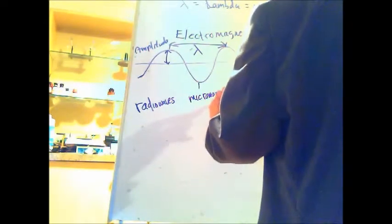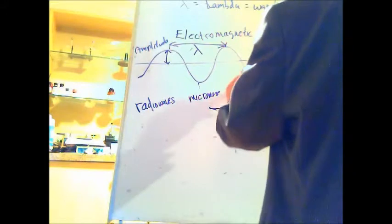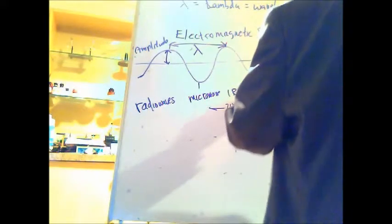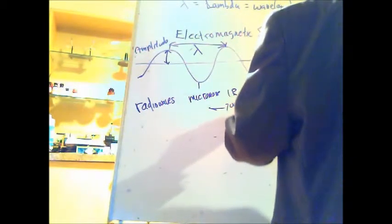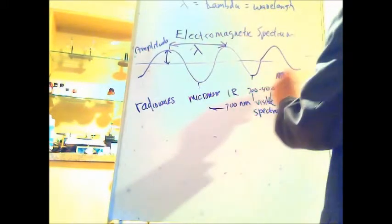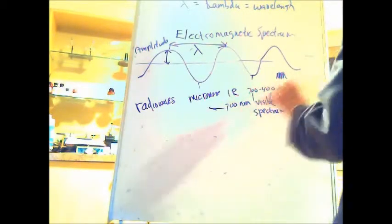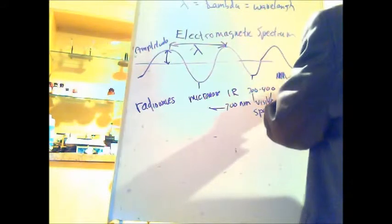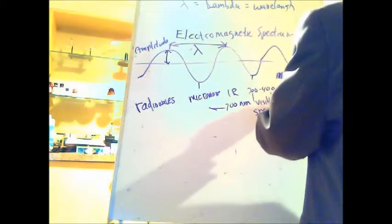The infrared starts at somewhere around 700 nanometers in wavelength and goes up to probably a couple thousand nanometers. Then below 700 nanometers — from about 700 to about 400 nanometers — is the very small section of what we call the visible spectrum, the stuff you can see with the naked eye. When we go below 400 down to maybe 100 nanometers, we're in the UV, or ultraviolet, region of the spectrum.